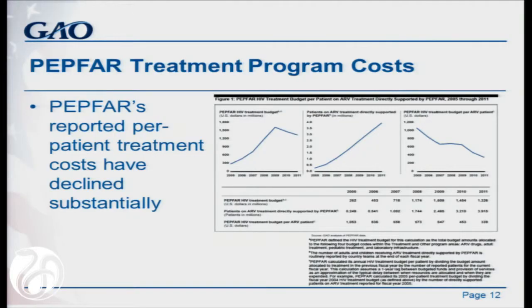I'll walk through in a little bit more detail about how we answered each of those objectives. For our first objective, we found there are a couple of factors that contributed to decreasing per patient treatment costs. You can see in the figure on the screen, in the graph all the way to the right, how per patient treatment costs have decreased from 2005 to 2011.